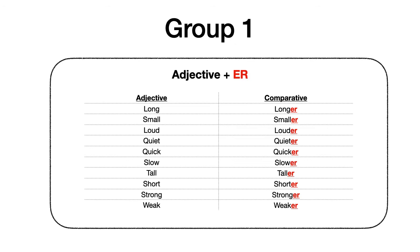Estos son los adjetivos que vimos hoy. Para el grupo número uno, tenemos el adjetivo y le agregamos ER al final para transformarlo en comparativo. Repeat after me: long → longer, small → smaller, loud → louder, quiet → quieter, quick → quicker, slow → slower, tall → taller, short → shorter, strong → stronger, weak → weaker.